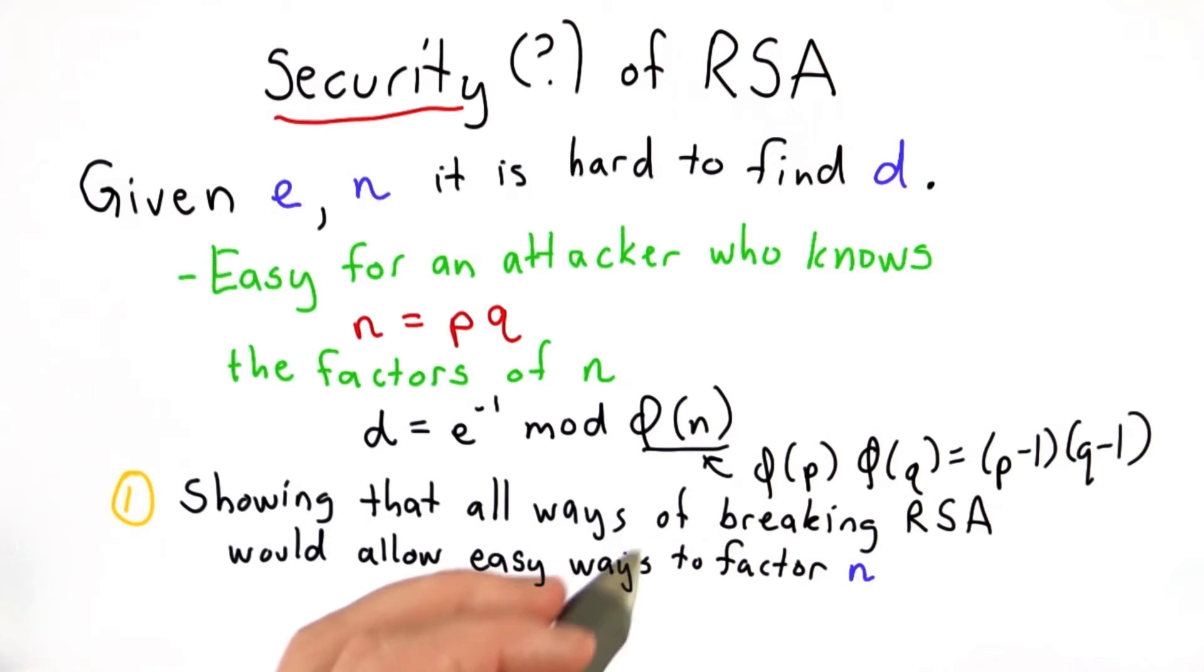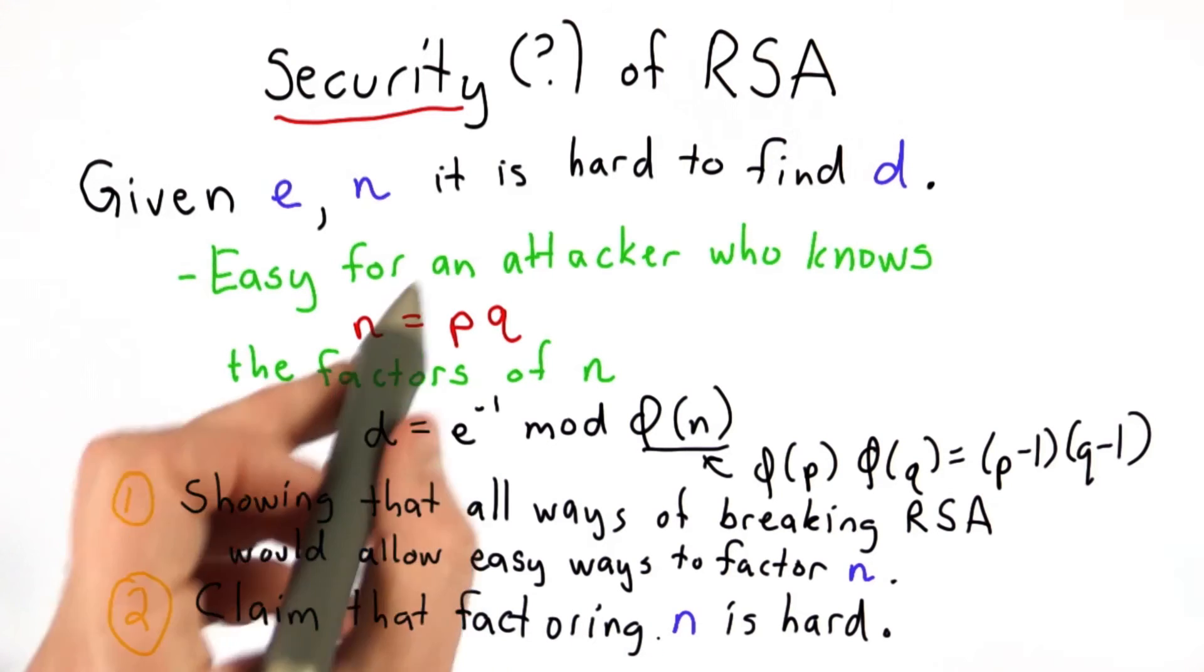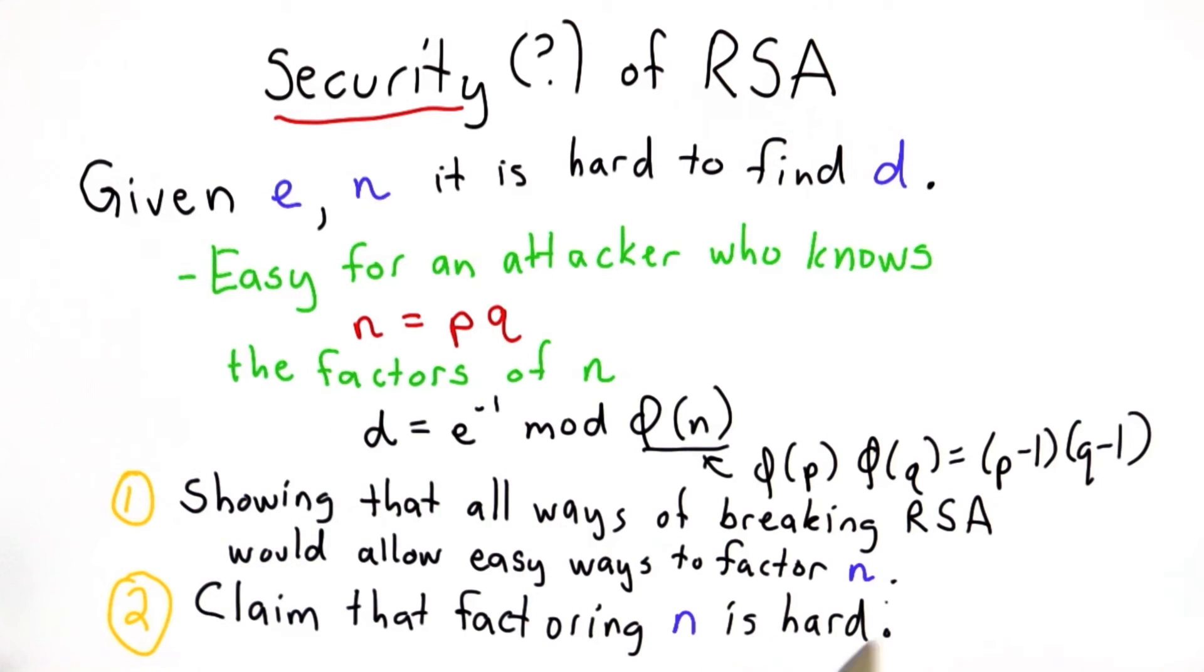The first is showing that all ways of breaking RSA would allow some easy way to factor n. And if we could use that way of breaking RSA to factor n, then we could always use that to factor large numbers. And that would contradict our second claim, that factoring large numbers constructed by multiplying two large primes is hard.